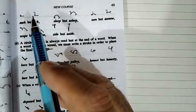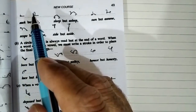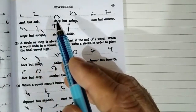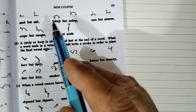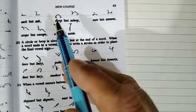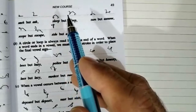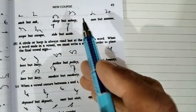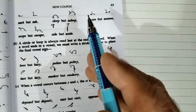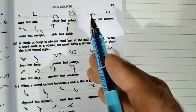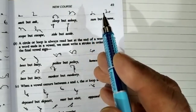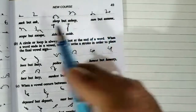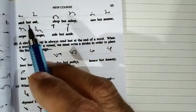But for 'ask', the vowel 'a' comes first, so we write the full outline. Similarly, 'sleep' — no vowel before S, so we use the circle. But 'asleep' — the vowel comes before S, so we write the full outline. Third example: 'some' — no vowel before S, circle is used. But 'assume' — vowel comes first, so the full outline is written.